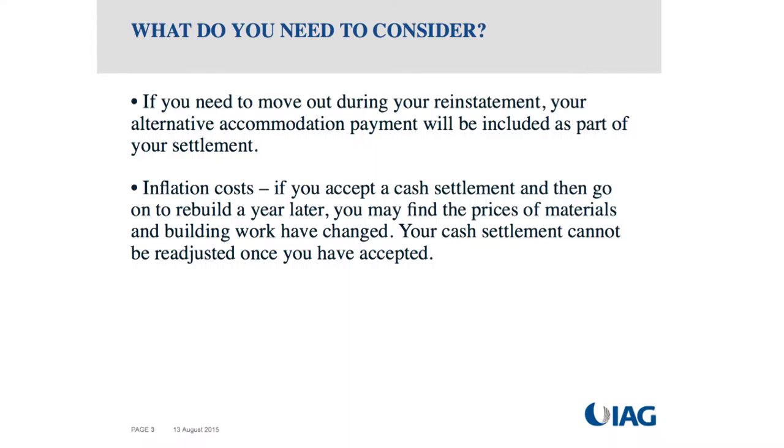On inflation costs: if you accept a cash settlement and then build a year later when prices have increased, you generally cannot go back to your insurer for inflation, because the cash is in the bank earning interest and the settlement was based on costs at the time. Where inflation may be included is if the assessment was done six months ago and you're settling today — your insurer should include inflation from the time of assessment to the time of settlement, unless the delay was at your request.